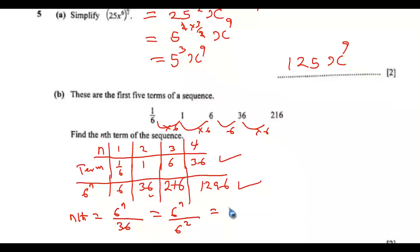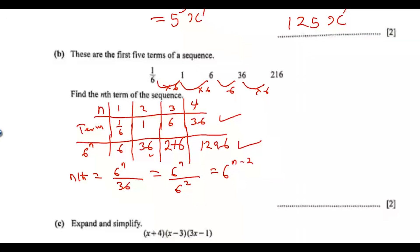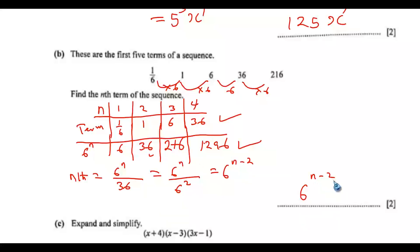So the nth term is 6 to the power of (n − 2). We can verify: when n = 1, we get 6^(−1) = 1/6 ✓. When n = 2, we get 6^0 = 1 ✓. That confirms the answer.